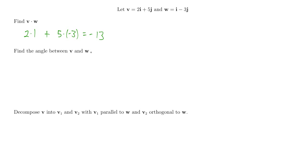Now let's see how we can use the dot product to compute the angle between v and w. I know right away that these two vectors are not orthogonal — not perpendicular — because if they were, the dot product would be 0. So it's going to be some angle other than 90 degrees. The cosine of the angle between them equals v dot w divided by the magnitude of v times the magnitude of w.